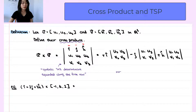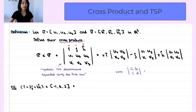And just a quick note: the determinant of a 2 by 2 matrix — suppose the entries are a, b, c, and d — the determinant is a times d minus b times c.